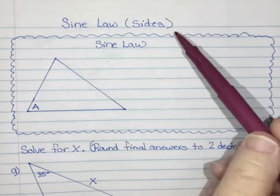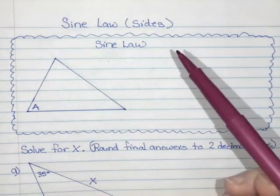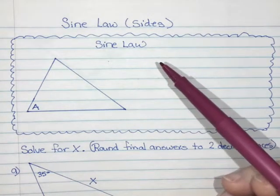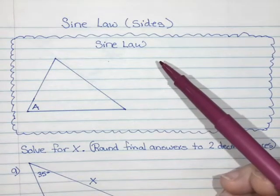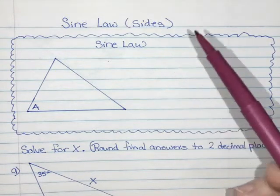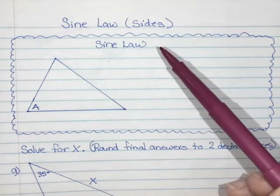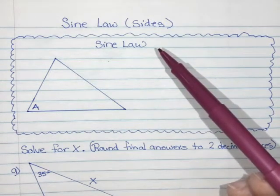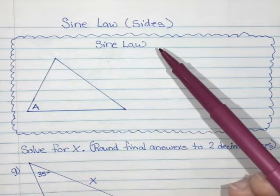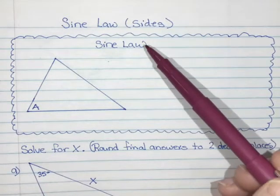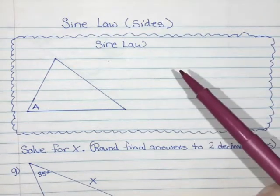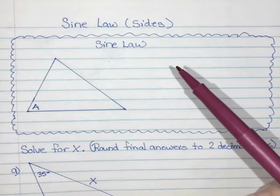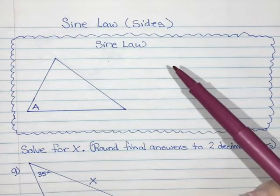Today we're talking about sine law. So far we've talked about Pythagorean Theorem, sine ratio, cosine ratio, and tangent ratio, but they only work when you have a right angle triangle with a 90 degree angle. Sine law is one of two methods that allows you to calculate an angle in any type of triangle, so it doesn't have to have a 90 degree angle.